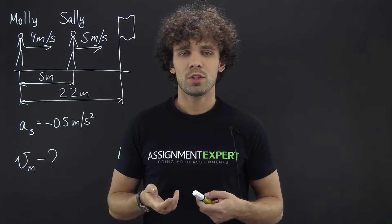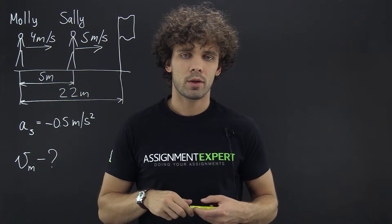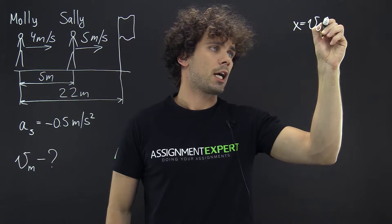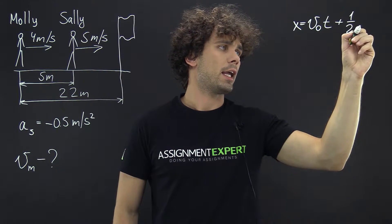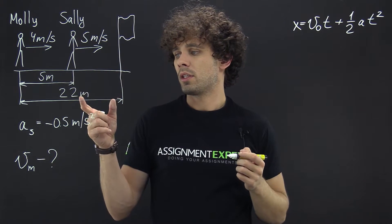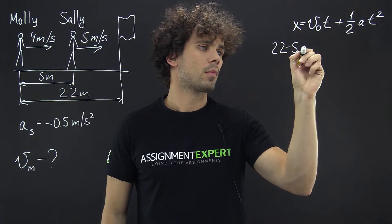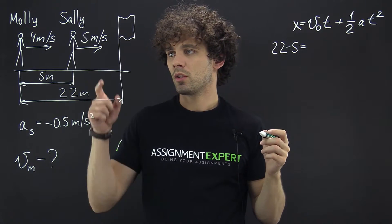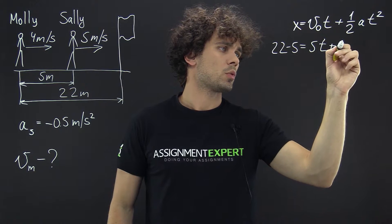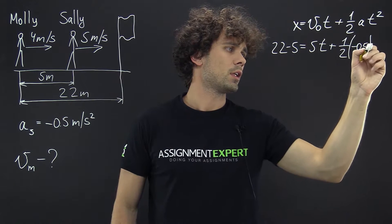First, we need to find the time needed for Sally to finish the race. For that, we use the kinematic equation: X = V₀·T + ½·A·T². In our case, X is the distance 22 minus 5 = 17 meters, the initial speed V₀ is 5 m/s, and A is negative 0.5 m/s².